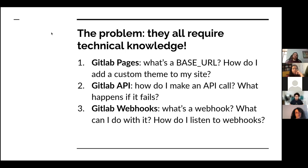The problem is that these all require a certain technical knowledge. For GitLab Pages, you need to know where it's going to be hosted and what's your base URL. It took me a little while to create my first GitLab page and get it working with a custom theme. The API requires knowing how to code and how to handle failures. And webhooks are even more complicated — what's even a webhook? How do you listen to webhooks and create an application that's constantly listening to events?